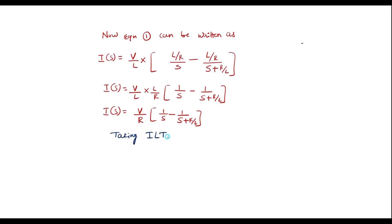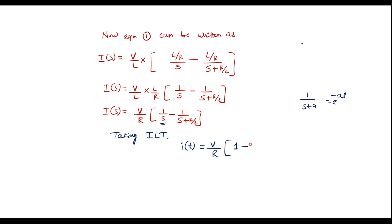Taking the inverse Laplace transform, inverse Laplace of I(s) gives i(t). The constant V/R is kept as it is. The inverse Laplace of 1/(s + a) is e^(−at), and here a is R/L, so we get i(t) equals V/R·(1 − e^(−R/L·t)). This is the current expression i(t) for the given RL circuit.